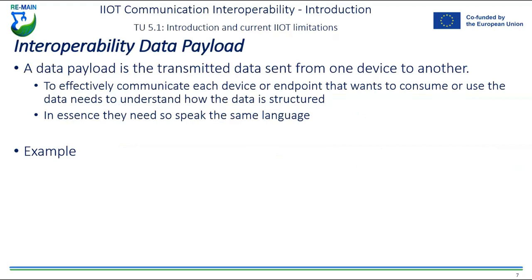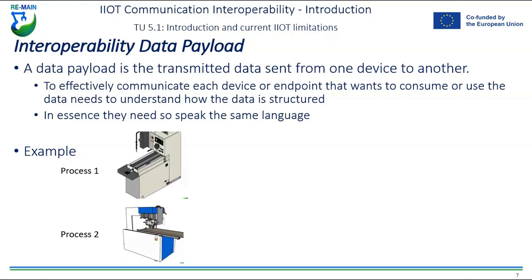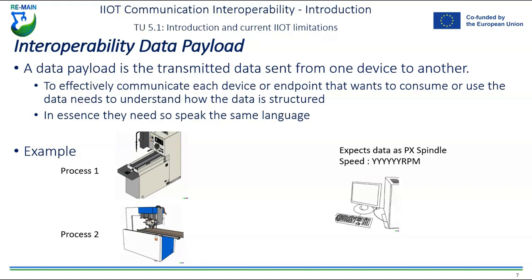A data payload is how data is structured from one device to another to effectively communicate. Each device or endpoint that wants to consume or use the data needs to understand how that data is going to be structured — they need to know the language, the linguistics, what relevant data is where within the data packet. For example, imagine a computer endpoint that expects data formatted as 'PX spindle speed' in a specific format.